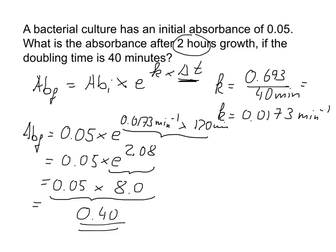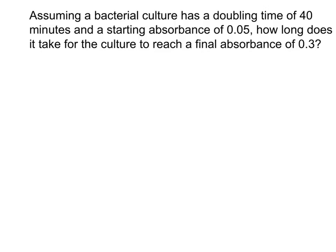So if you've got a doubling time of 40 minutes, two hours of growth, and we start with an absorbance of 0.05, then this would give us a final absorbance of 0.4. Here's another question, very similar: assuming a bacterial culture has a doubling time of 40 minutes and a starting absorbance of 0.05, how long does it take for this culture to reach a final absorbance of 0.3, which we want for an experiment?